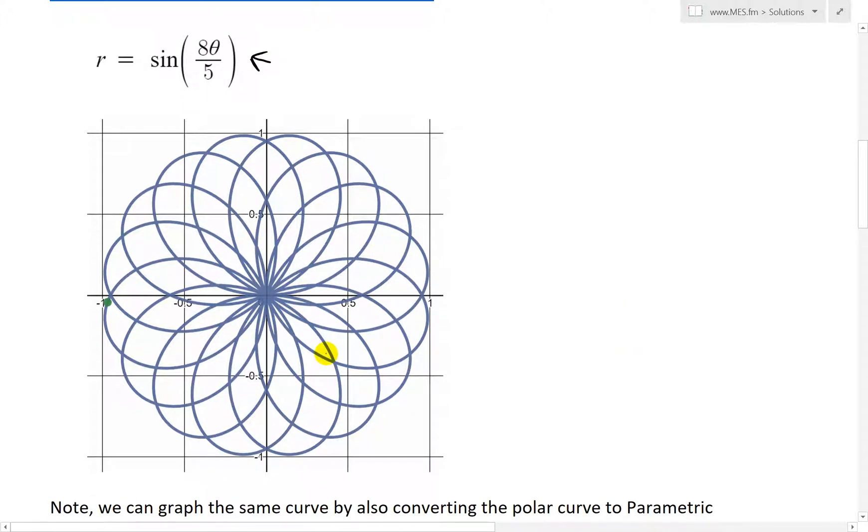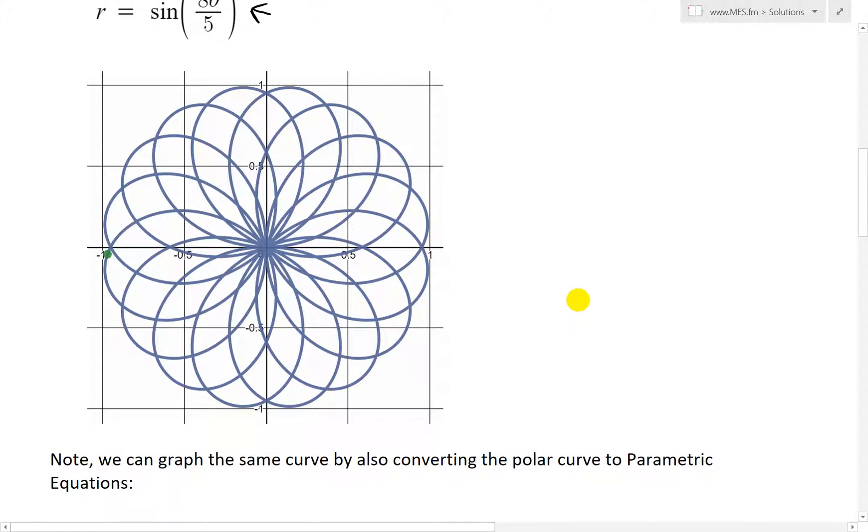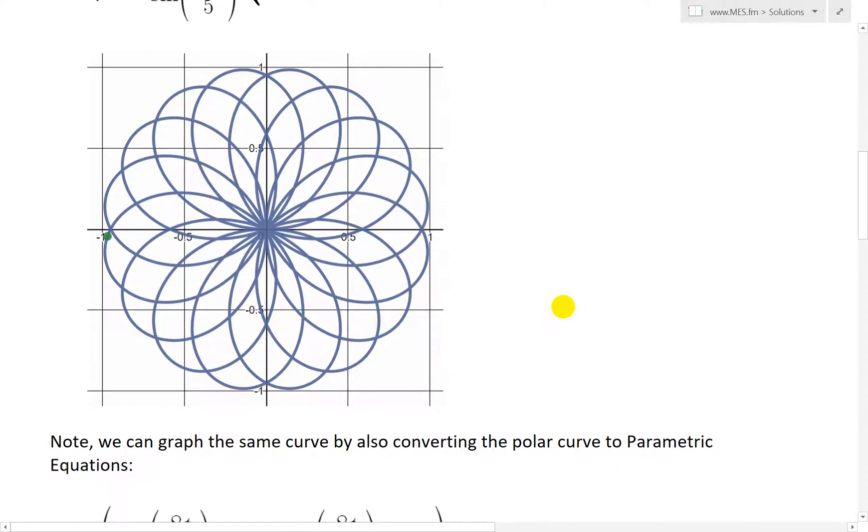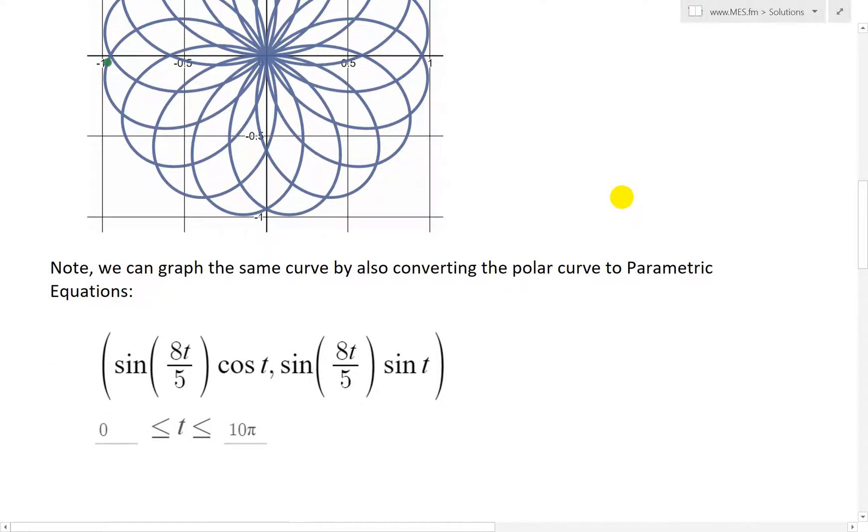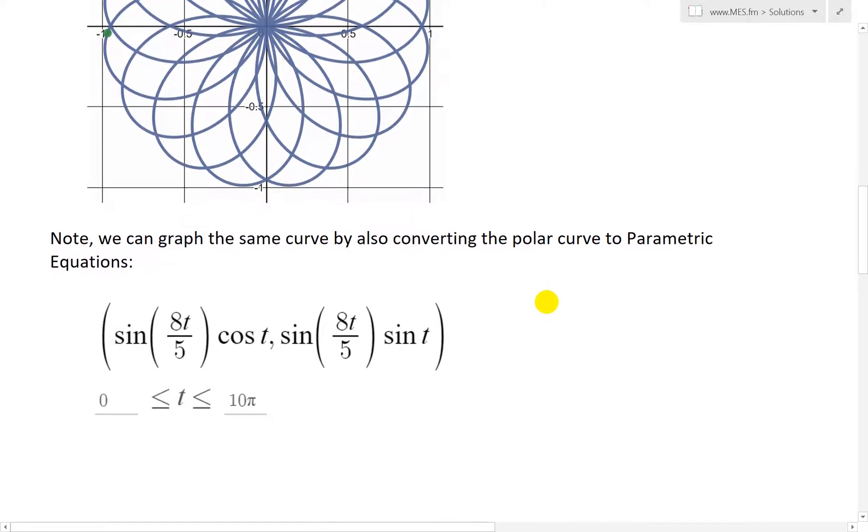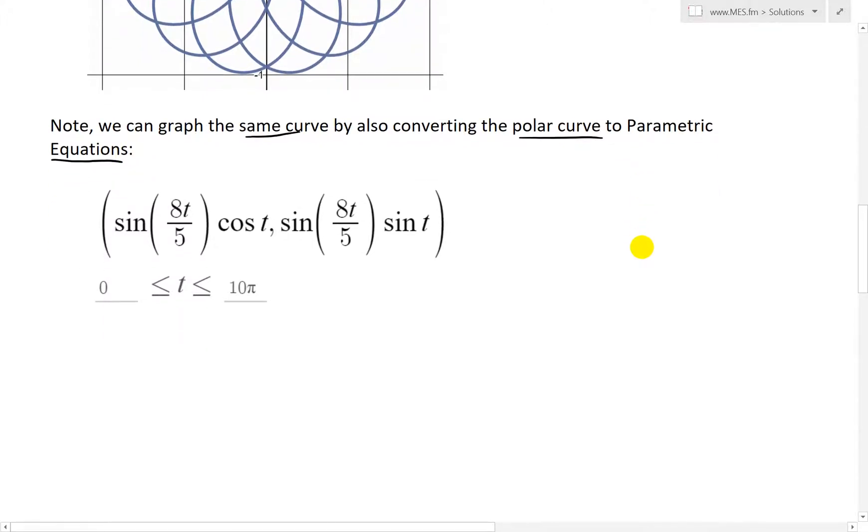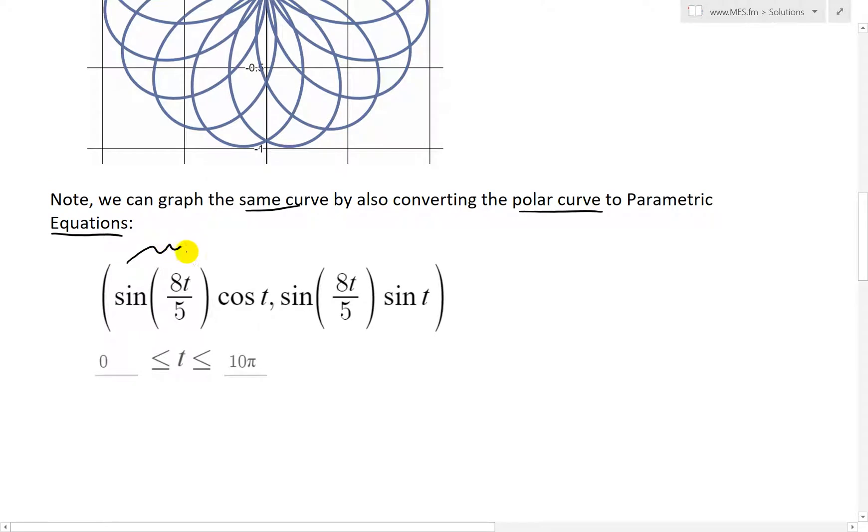You just type that in, you get this crazy shape like this. It's a circular spiral flower-looking shape, which is pretty amazing. So I also want to make a note, like always with the Desmos calculator, you can graph the same polar curve.